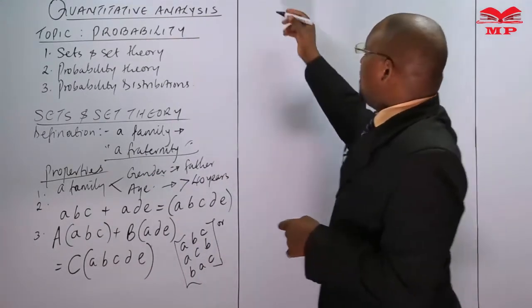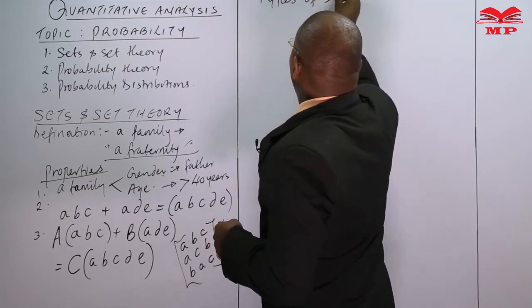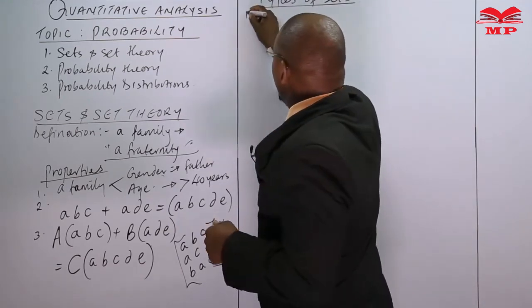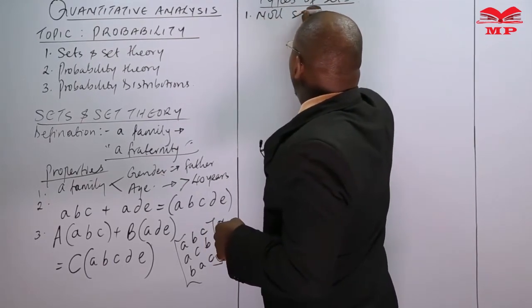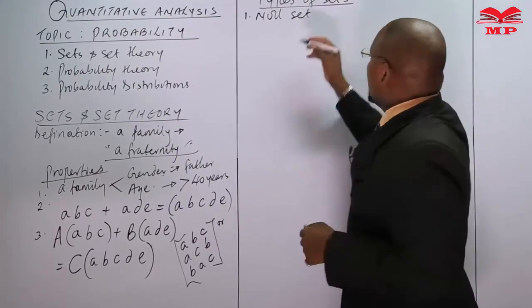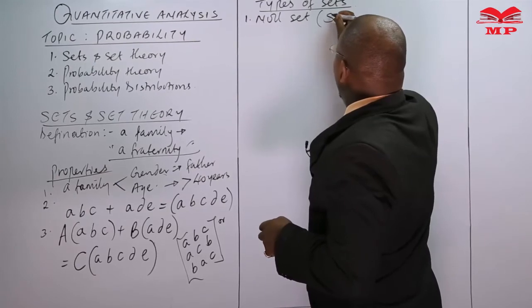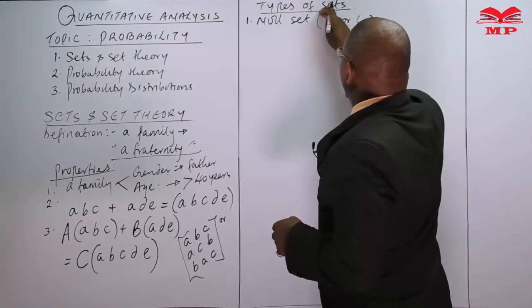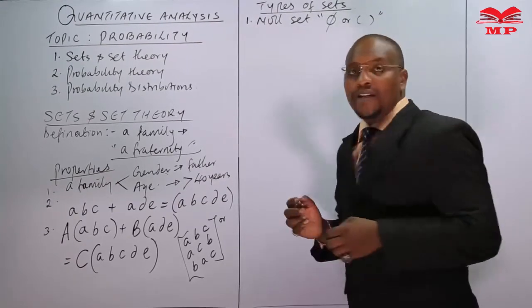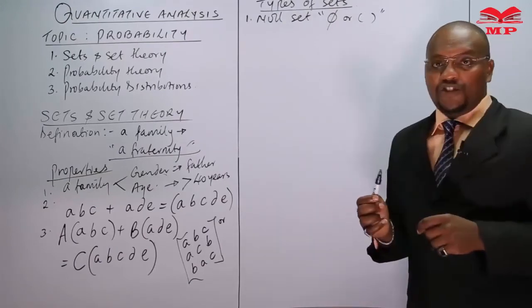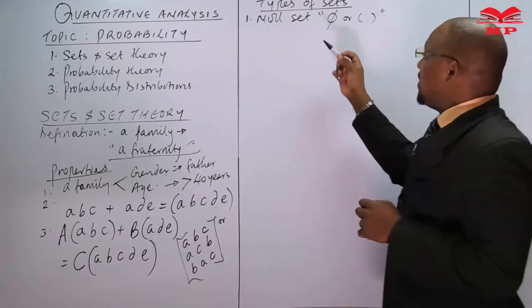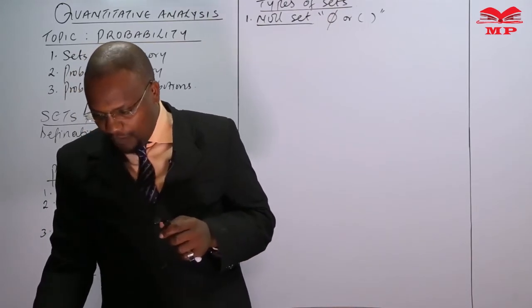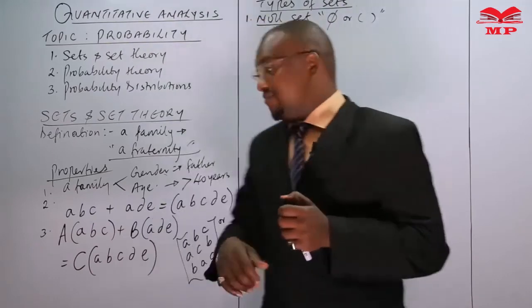Now let's talk about types of sets. The first type is the null set. A null set is denoted by a circle with a slash — the symbol ∅ — or by an empty bracket. This is how we denote a null set.